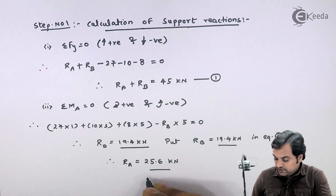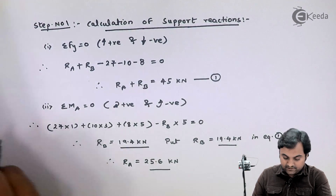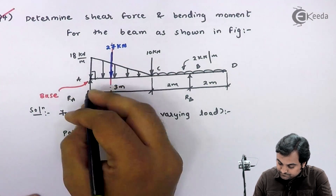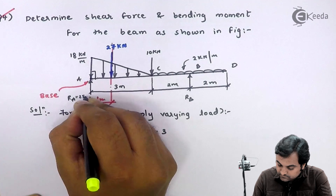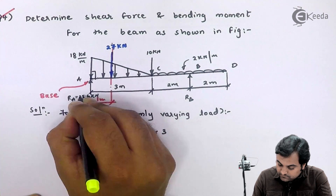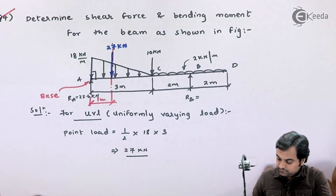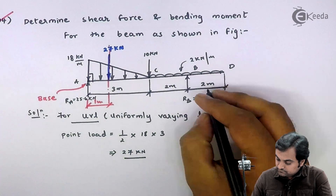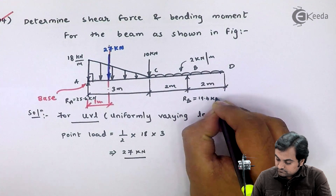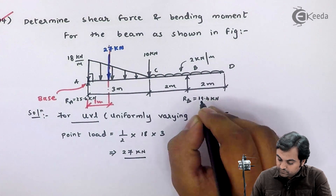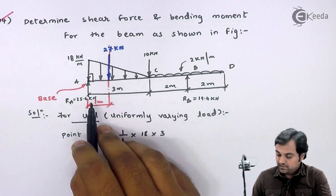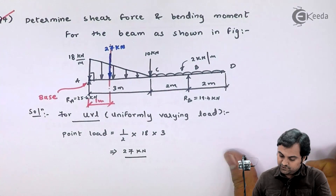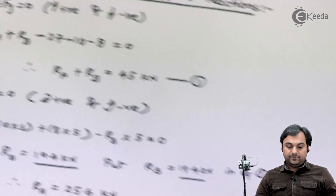Substituting R_B equal to 19.4 kilonewton into equation number one, I get R_A equal to 25.6 kilonewton. I now have both R_A and R_B values and will mark them on the diagram. Step number one is complete.